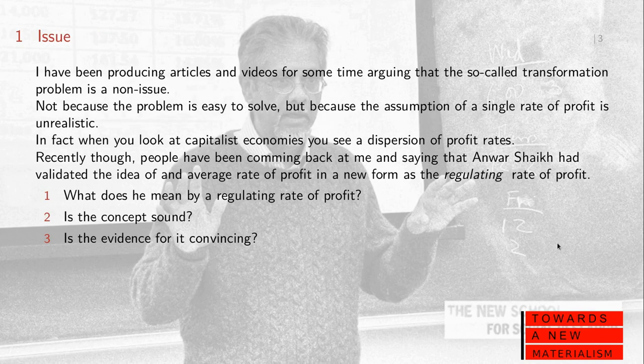Why am I talking about him? I've been producing articles and videos for a while arguing the so-called transformation problem is a non-issue — not because the problem is easy to solve, but because the assumption on which it is based, of a single rate of profit, is unrealistic. When you look at capitalist economies, you see a dispersion of profit rates. Recently, though, people have been coming back to me saying that Anwar Sheikh has validated the idea of an average rate of profit in the new form of the regulating rate of profit. So I'm going to look at what he means by the regulating rate of profit, whether the concept is sound, and whether the evidence for it is convincing.